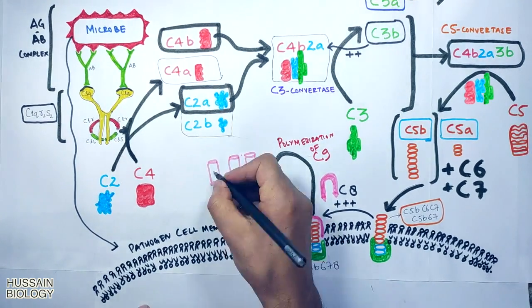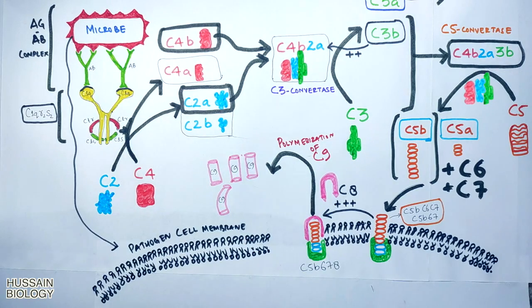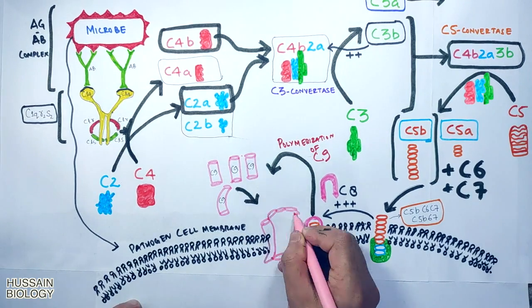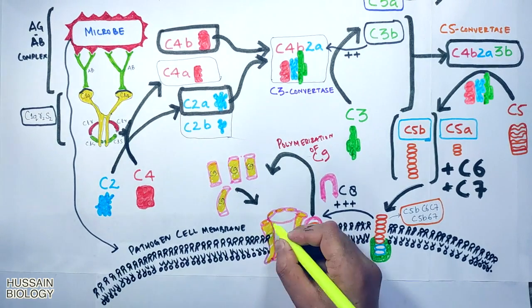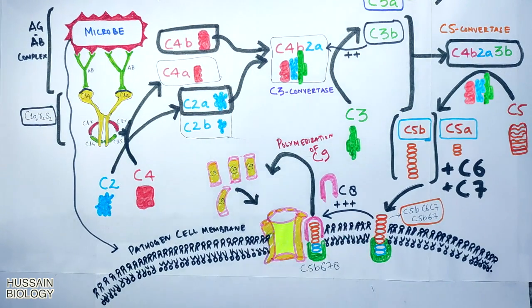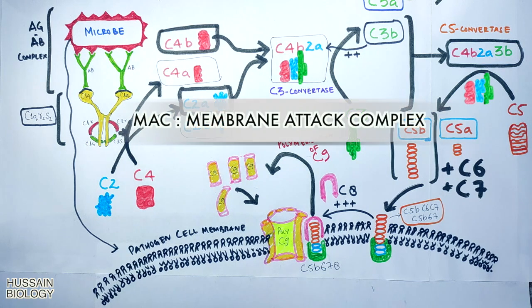In this diagram, C5b678 initiates the polymerization of C9 molecules into the pathogen membrane and eventually we get poly C9 in the pathogen membrane. This forms a pore in the membrane and is called the MAC or membrane attack complex.